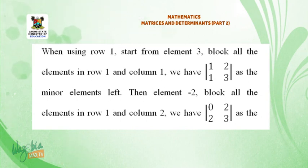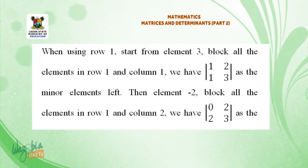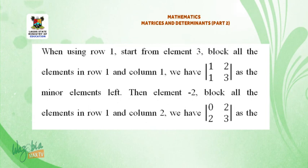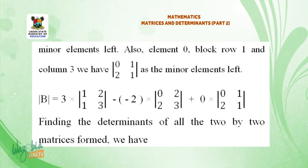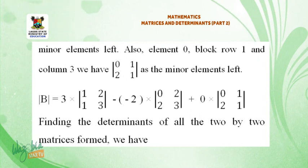Then element minus 2: block all the elements in row 1 and column 2 — we have 0, 2, 2, 3 as the minor elements left. Also, element 0: block all the elements in row 1 and column 3 — we have 0, 1, 2, 1 as the minor elements left.